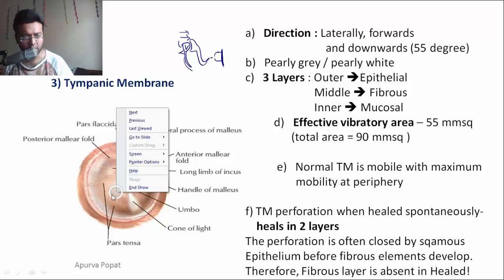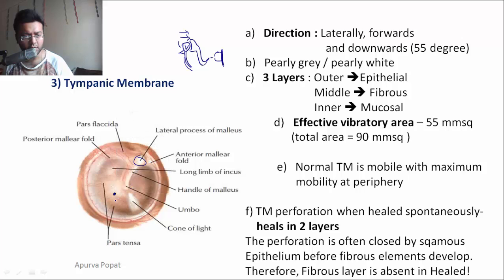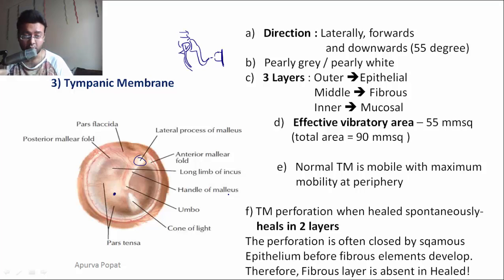If there is a central perforation, it is defined as a perforation that is surrounded on all sides by tympanic membrane — that is the central perforation. It is the safest type of perforation. If the central perforation is small enough, it can heal by itself.